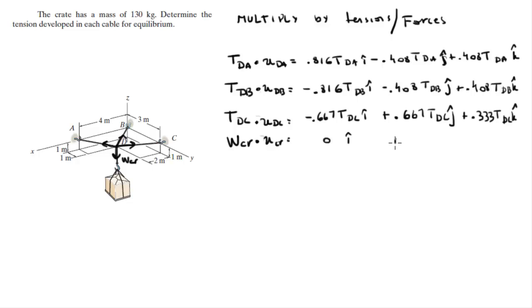And this one is 0 i plus 0 j minus the weight in the k. And you know that when you add all these together, you should get the origin, because it's statics and this is an equilibrium. Keyword equilibrium right here.